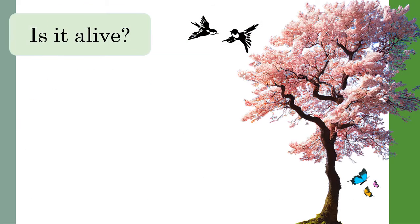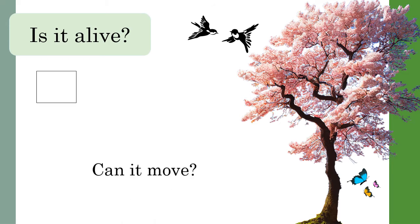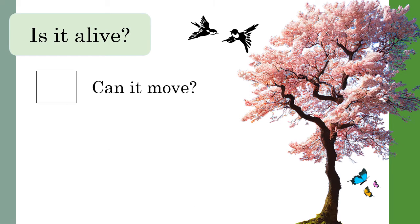Before we group living things together we need to ask a couple of questions to clarify if something is alive. We can ask: can it move? We see animals moving around but plants can also move and change position, for example when they reach out their leaves for more sunlight.